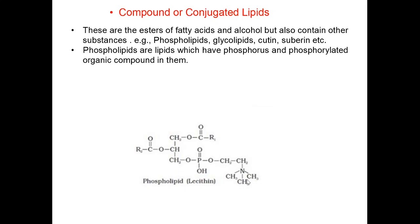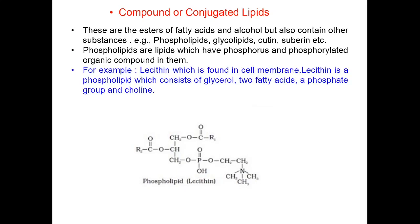Phospholipids are lipids which have phosphorus and phosphorylated organic compounds in them. For example, lecithin which is found in cell membrane. Lecithin is a phospholipid which consists of glycerol, two fatty acids, a phosphate group and choline. This is the diagram here of lecithin. This is a glycerol molecule, then two fatty acids and this is the phosphate and this is choline.